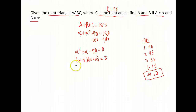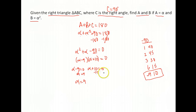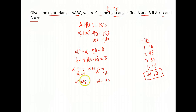Set each factor equal to zero and solve both. Alpha minus 9 equals zero gives alpha equals 9. Alpha plus 10 equals zero gives alpha equals negative 10. So we have two solutions: alpha is 9 and alpha is negative 10. But we can't have a negative angle measure inside a triangle, so alpha equals negative 10 cannot be a solution. Our solution is alpha equals 9.